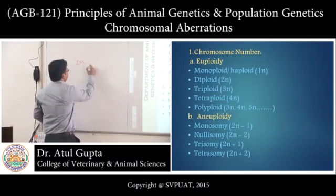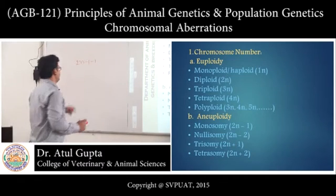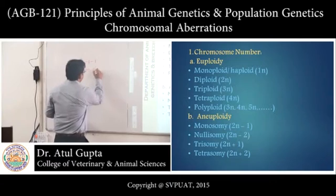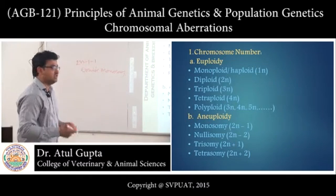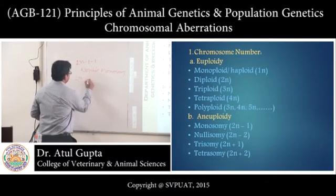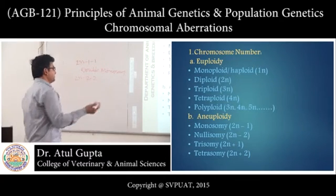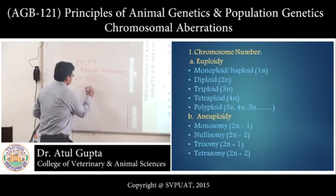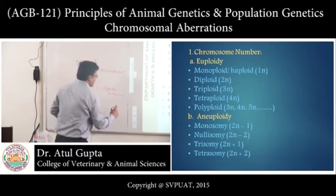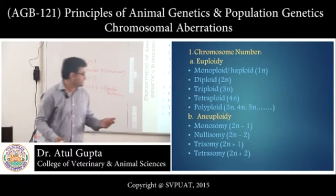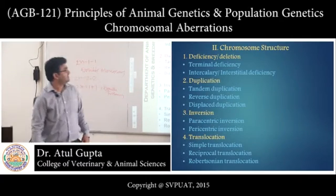Other combined conditions also exist. If the formula is 2n minus 1 minus 1, this is called double monosomy. If the formula is 2n minus 2 minus 2, it is called double nullisomy. Similarly, in trisomy, if the formula is 2n plus 1 plus 1, this is double trisomy. And in tetrasomy, if the formula is 2n plus 2 plus 2, this is called double tetrasomy.